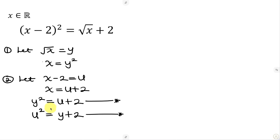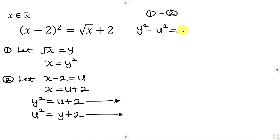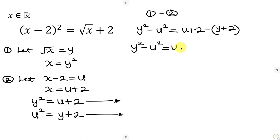Notice the symmetry in these two equations. The simplest way to solve a symmetric equation is to subtract them. So doing equation 1 minus equation 2: y² - u² on the left equals (u + 2) - (y + 2) on the right. Opening the bracket with the negative, the 2's cancel, leaving y² - u² = u - y.